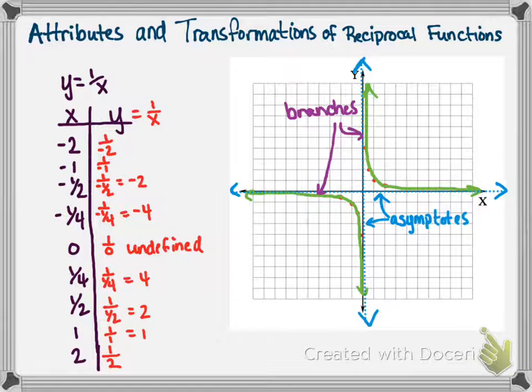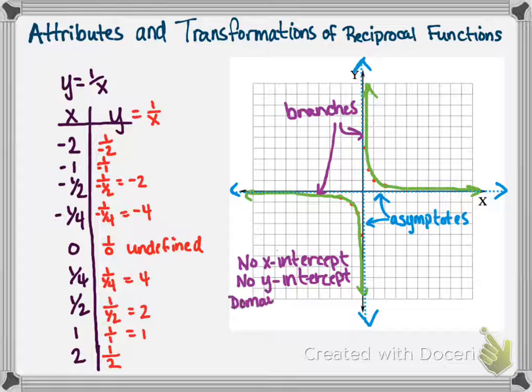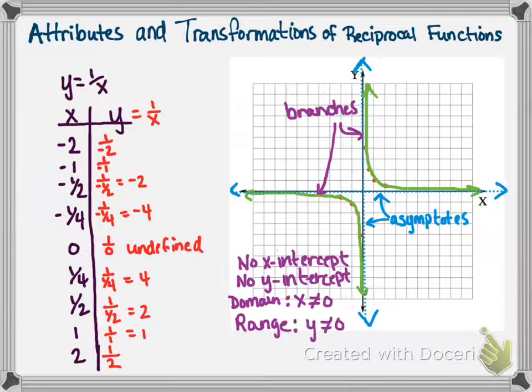As you've noticed, there's two different parts to this graph. It's discontinuous. These parts are called branches. Some things to note: there's no x-intercept and no y-intercept. The domain is all real numbers except x cannot equal 0. The range is all real numbers except y does not equal 0.